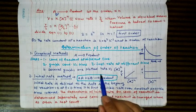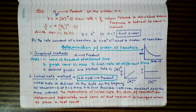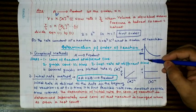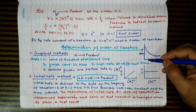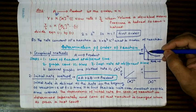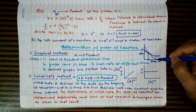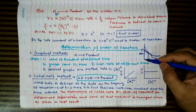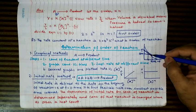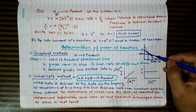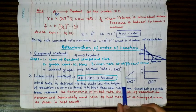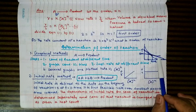The next step is to determine the instantaneous rate at different times. To do this, draw a perpendicular to the curve at a given time, plot the tangent at that point, extrapolate it on both sides, and then calculate the slope as perpendicular divided by base. This gives the rate at that time. Similarly, tangents are drawn at different times to find instantaneous rates at each point.